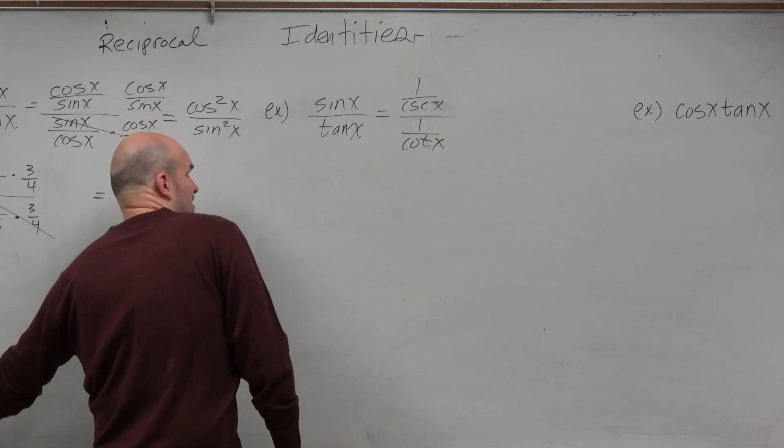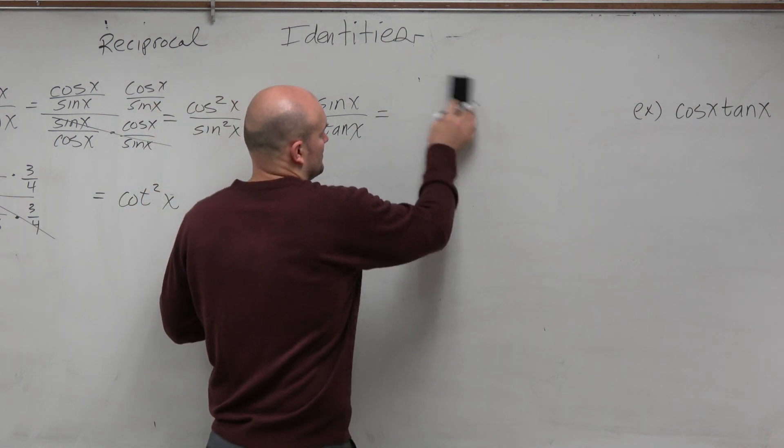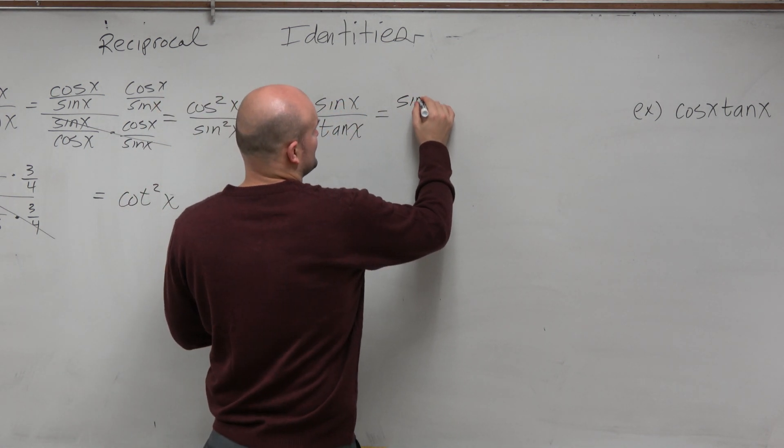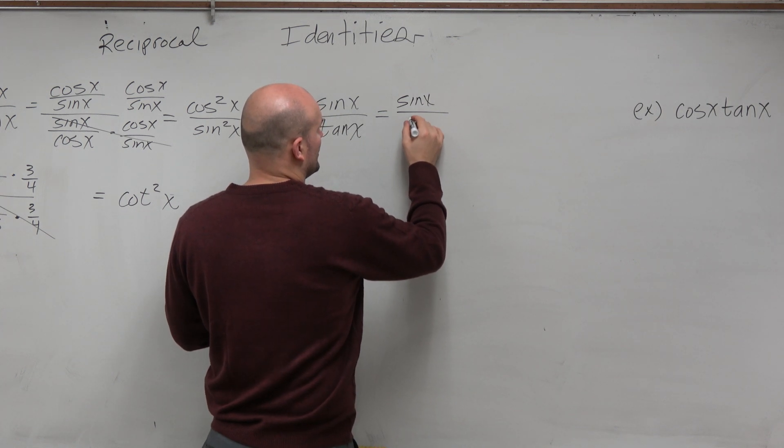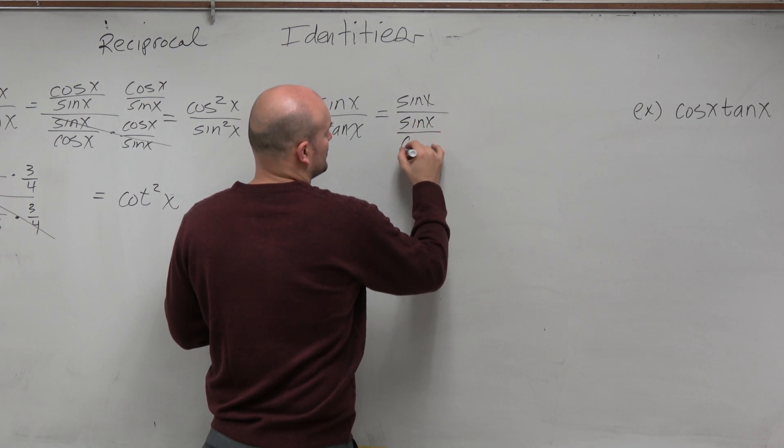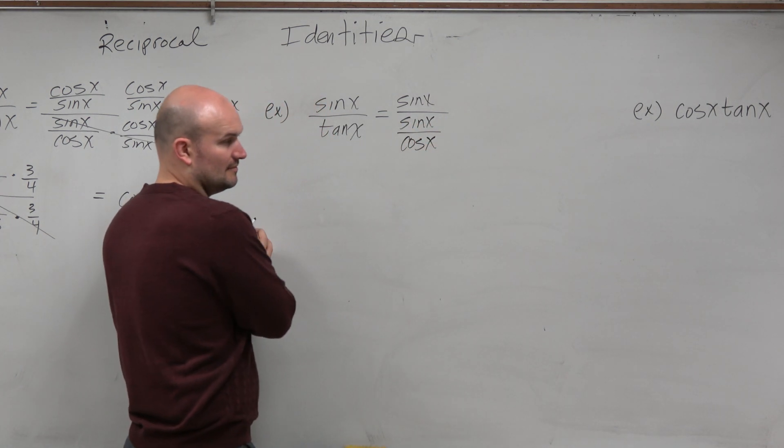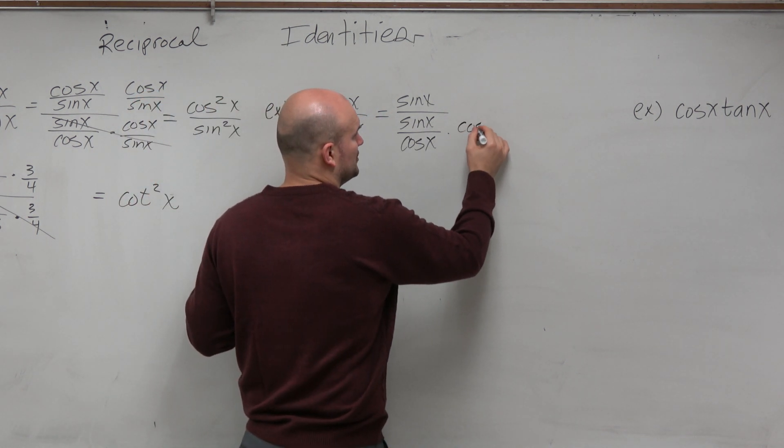So again, to better understand this, we can just rewrite this as sine of x over sine of x over cosine of x. And if I wanted to get rid of that fraction, I would multiply by the reciprocal again.